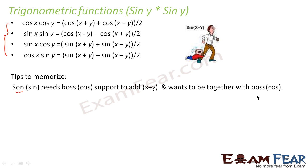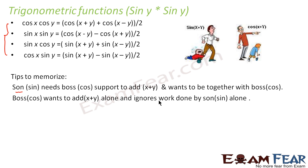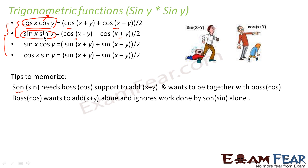The tip is: 'son wants boss support to add — he wants to be together with the boss — and boss wants to add things alone, so he ignores work done by son.' When you say cos x · cos y, that means boss is doing things alone. So we use cos form on the right-hand side: cos(x+y) and cos(x-y) divided by 2.